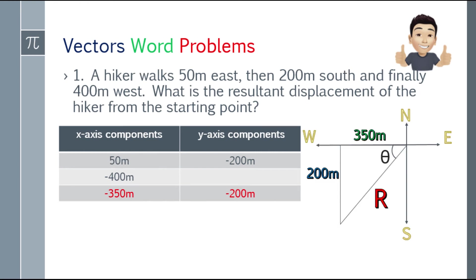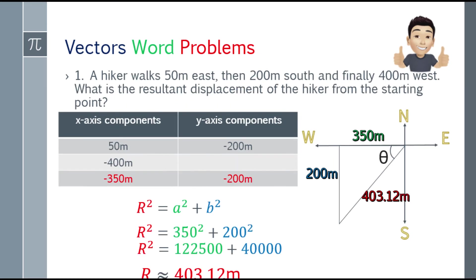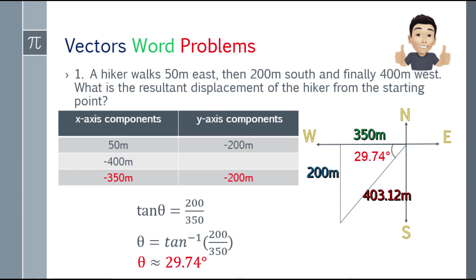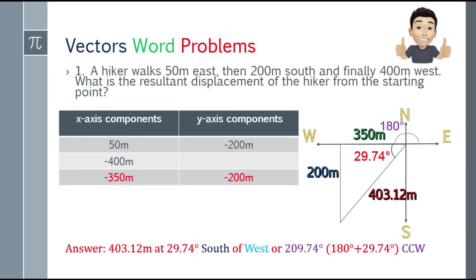Let's form the right triangle. The two sides are 200 meters and 350 meters. Find the resultant: r² = 350² + 200², and the resultant will be approximately 403.12 meters. For the angle: tangent theta = 200 over 350. Arc tan of 200 over 350 gives approximately 29.74 degrees. The final answer is 403.12 meters at 29.74 degrees south of west, or 209.74 degrees CCW.